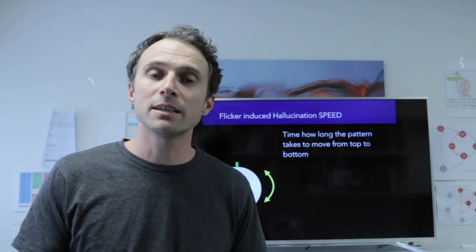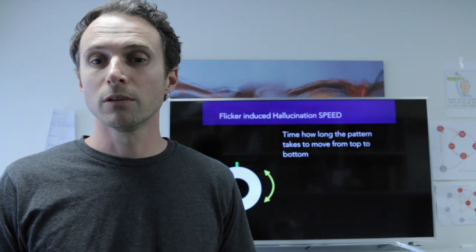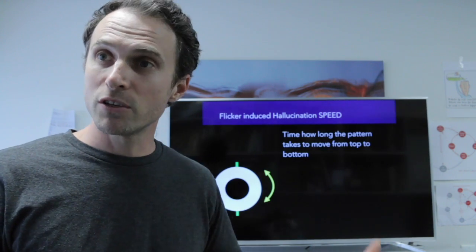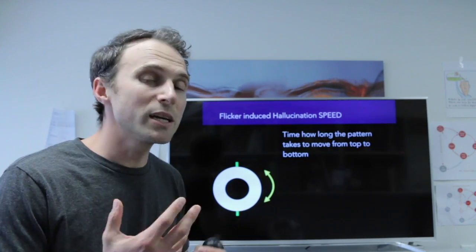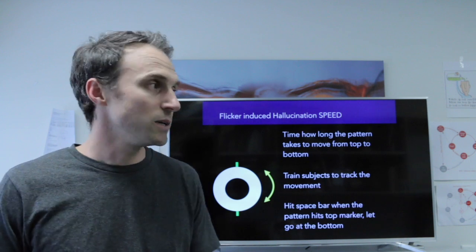And that gives us a time estimate for how long it takes to do half a revolution. And we also know the size of the stimulus. So we can quite easily figure out the speed.